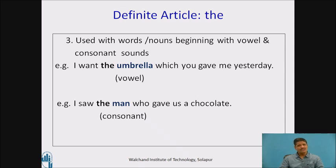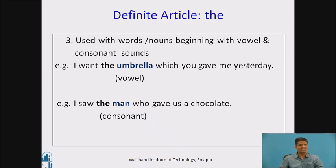Next example: 'I saw the man who gave us a chocolate.' The noun 'man' has a definite reference and begins with a consonant sound, hence we have used the definite article 'the'. These two examples make it clear that we use the definite article 'the' with words beginning with vowel sounds as well as consonant sounds. These are the three general rules for the use of the definite article 'the'. There are exceptions, which we will see in the next lecture.